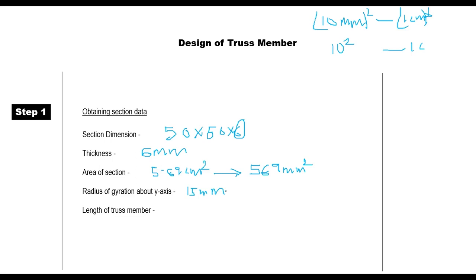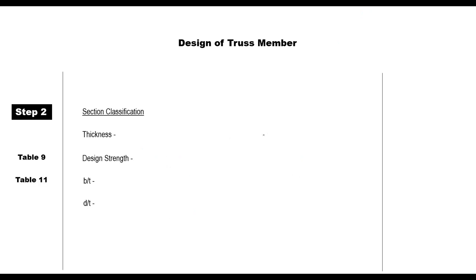Now we have most of the information needed. Regarding the length of the truss member, we are going to design both the tension and compression members, but let us take the compression member first. The length is 0.6 m, or 600 mm. These are all the parameters needed for our design before moving to Step 2.